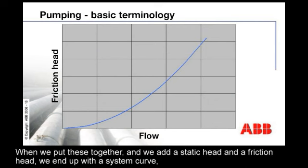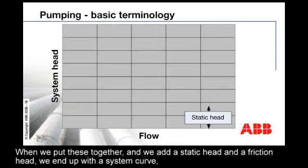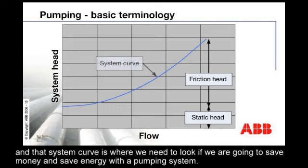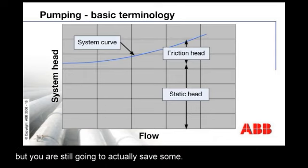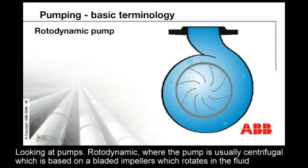When we put these together and add a static head and a friction head, we end up with a system curve. That system curve is where we need to look if we're going to save money and save energy with a pumping system. Where the static head is relatively high compared to the friction head, there is actually less capability of saving money, but you're still going to save some.